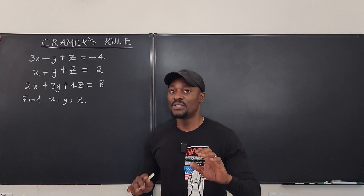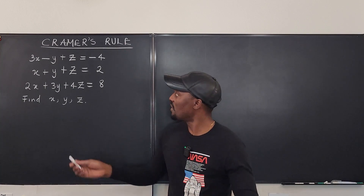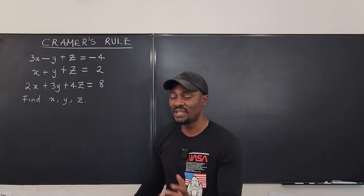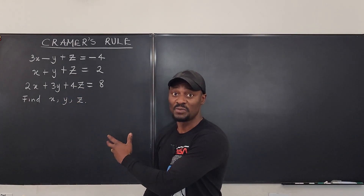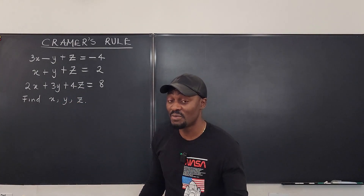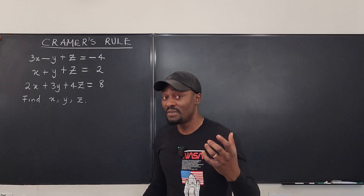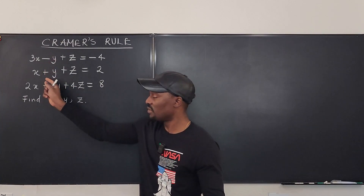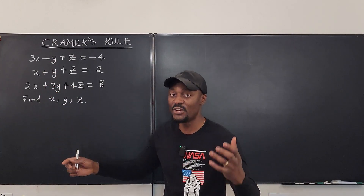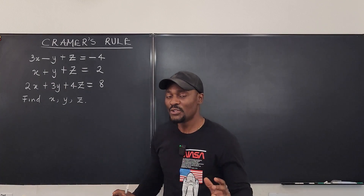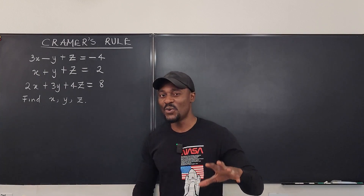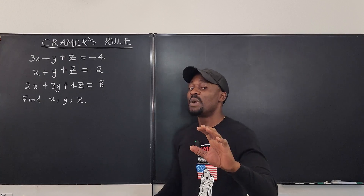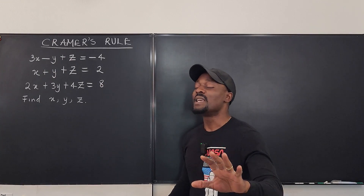Now if you don't know how to find the determinant — there are three variables here, a three-by-three matrix — you can't use Cramer's rule for this. You have to first know how to find the determinant of a three-by-three matrix. If we have two variables and two equations, then you need to know the two-by-two. Just make sure that knowing determinants is important for you to use Cramer's rule, but it has an amazing advantage.